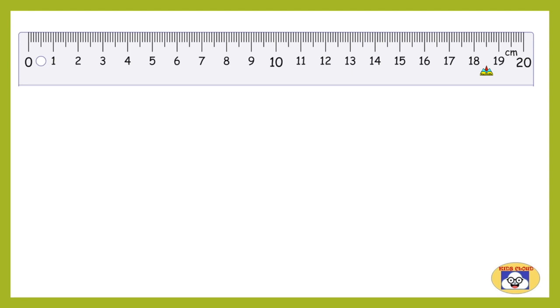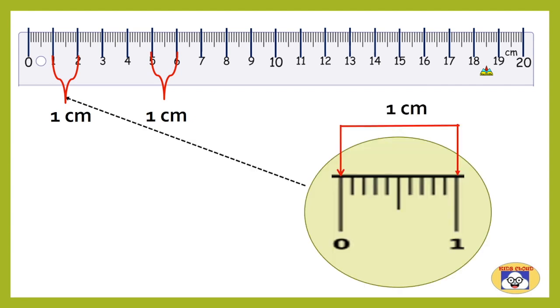Each longer line on the ruler corresponds to the centimeter scale. Two adjacent longer lines represents a length equal to one centimeter. Let's magnify this region for better understanding. Now it's visible that each one centimeter region is further divided into 10 smaller equal parts. Each line represents one millimeter, which is equal to 1/10 or 0.1 centimeter.